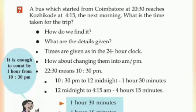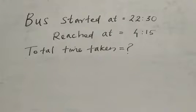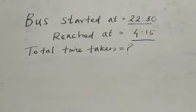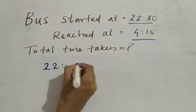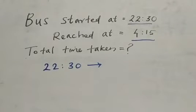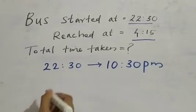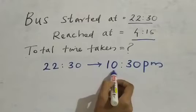Let us do another activity. A bus which started from Coimbatore at 20:30 reaches Kodaikanal at 4:15 the next morning. The time is given in the 24-hour system. We want to calculate the total time. Please note that 20:30 in the 24-hour system means 10:30 PM.